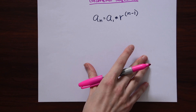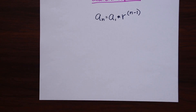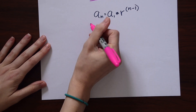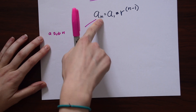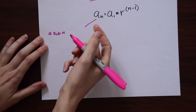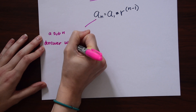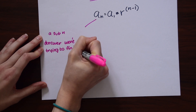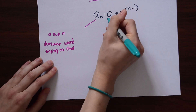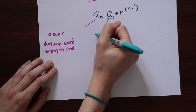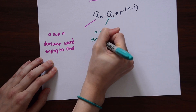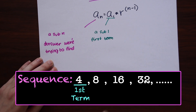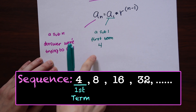So the geometric sequence formula is a sub n. Let's write down what each part of this means. So we have a sub n — that's just the answer we're trying to find. And a sub 1 is the first term of our sequence, pronounced a sub 1. So if you look at our sequence, the first term is just 4, so we know that a sub 1 is 4.